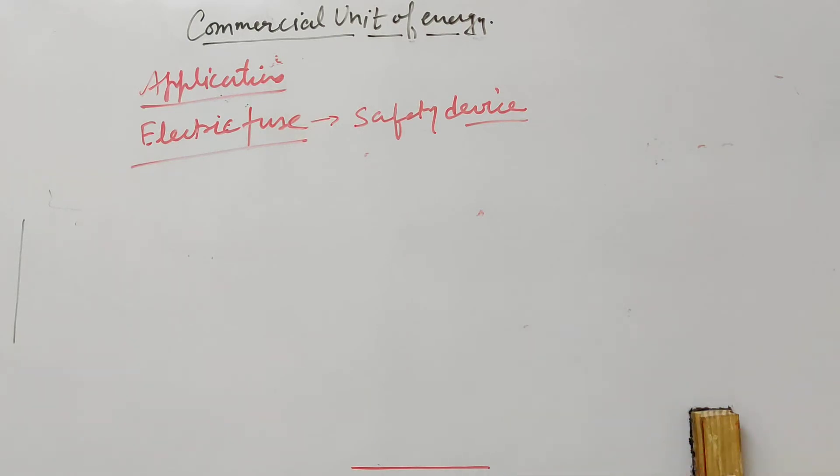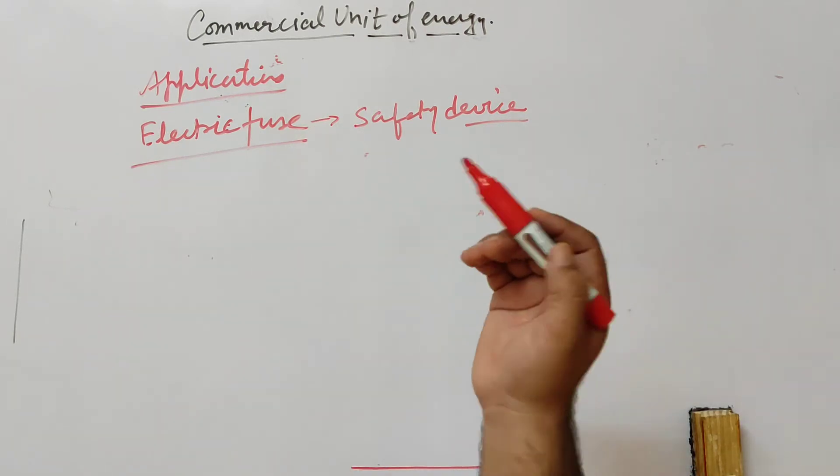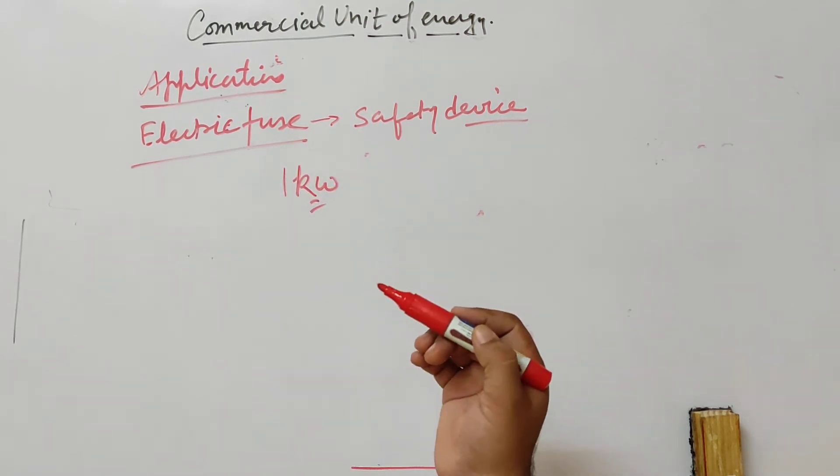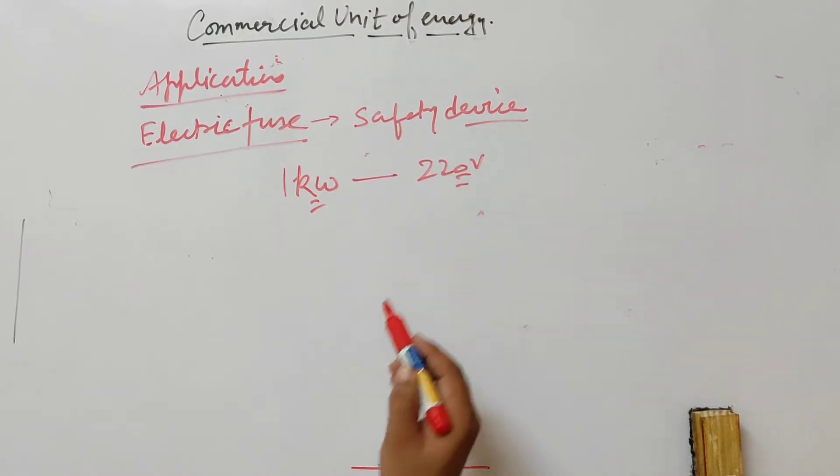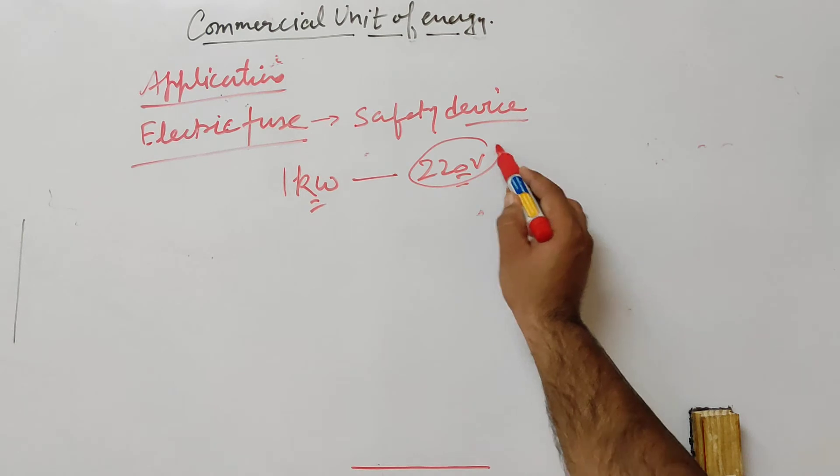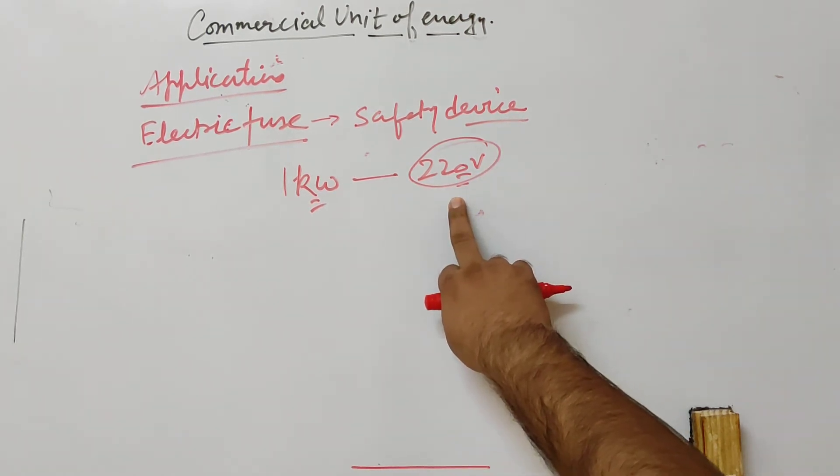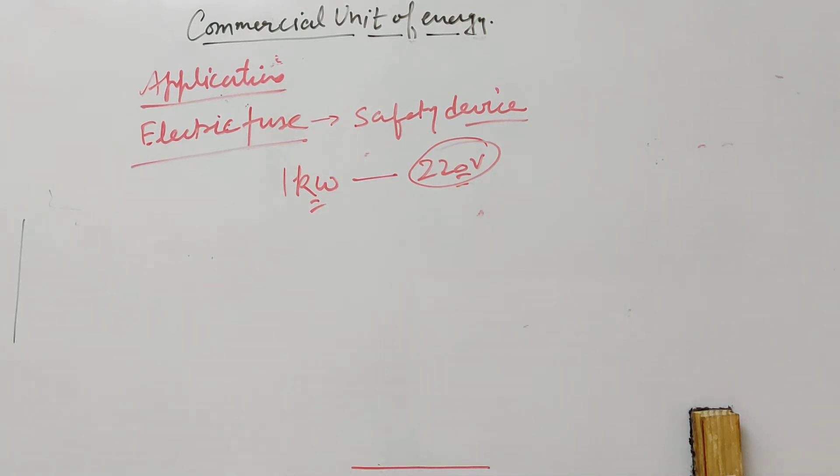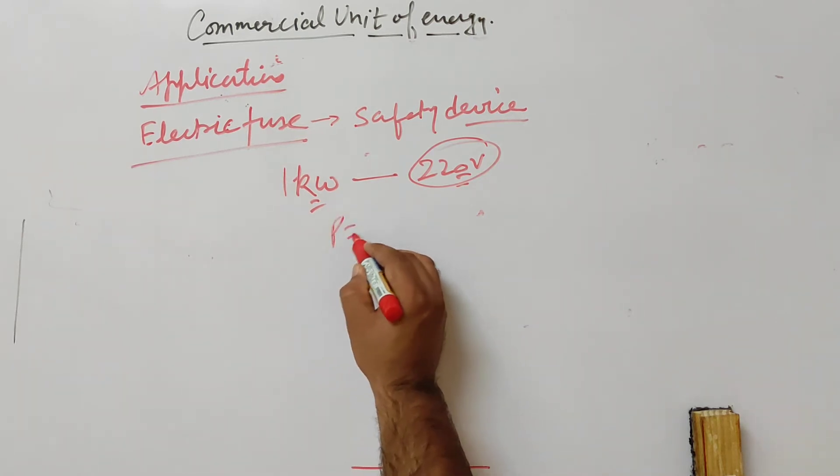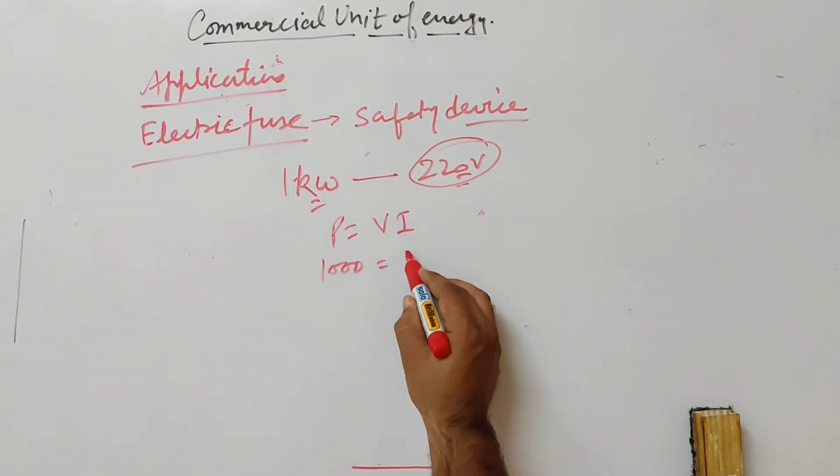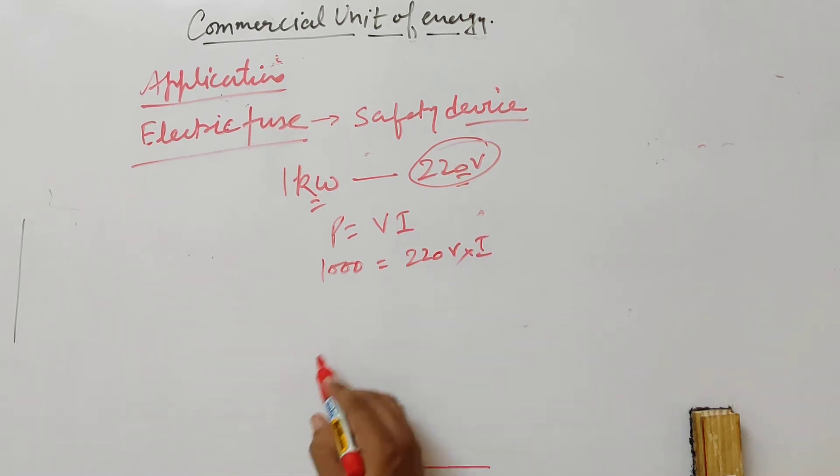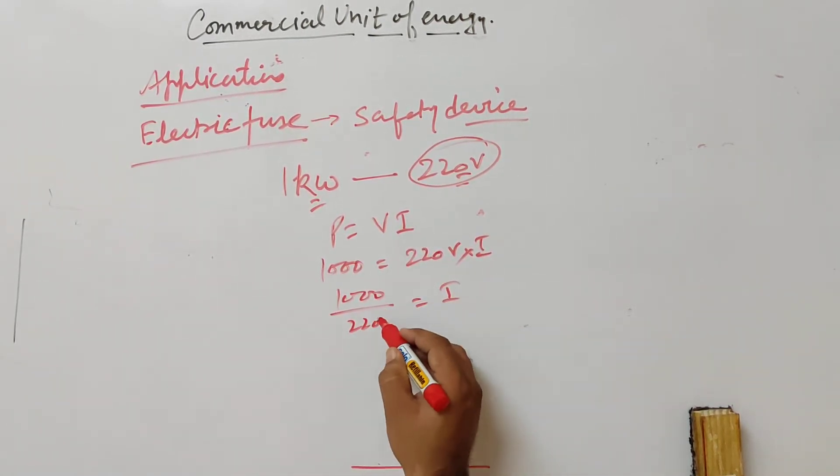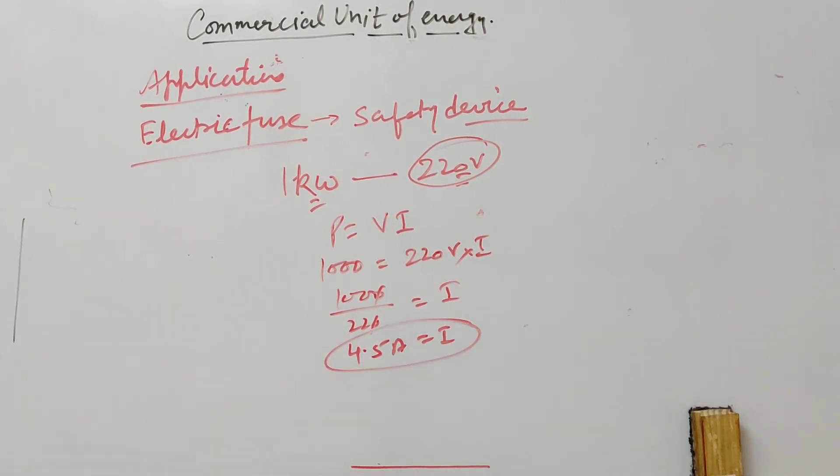This also has a rating. For example, we have one electric iron which is 1 kilowatt operating on 220 volts. If 220 volts is applied, how much fuse do we use? P equals V I. Power is 1000 watts, voltage is 220 volts into I. So I equals 1000 upon 220, which gives 4.5 ampere.